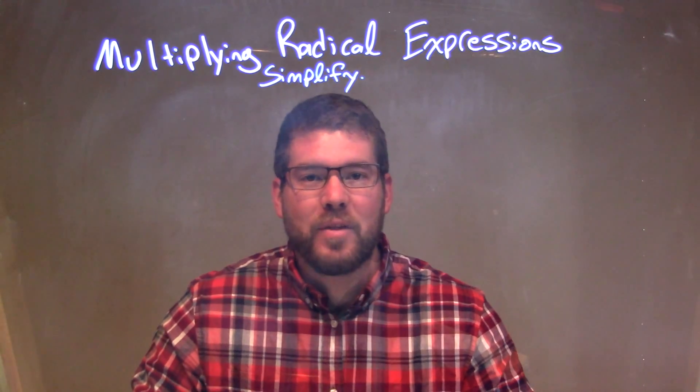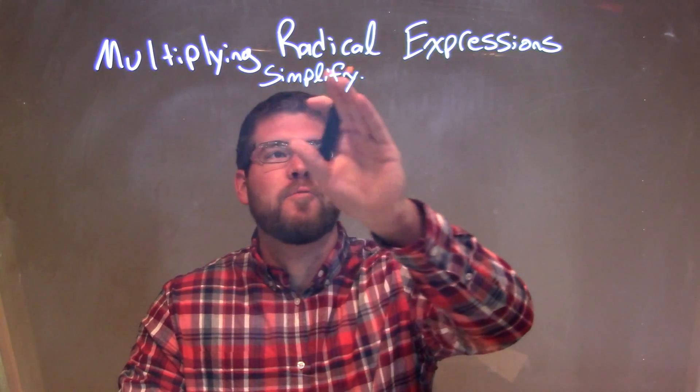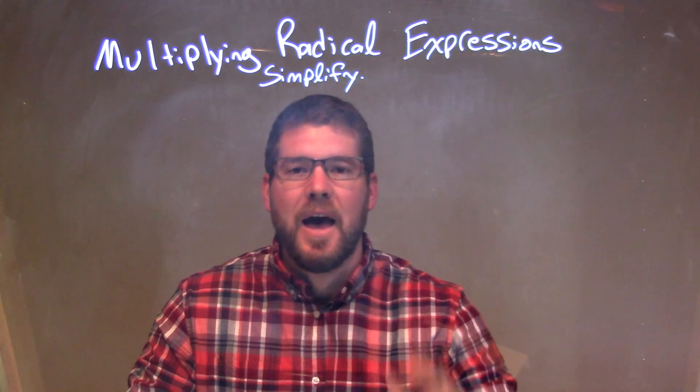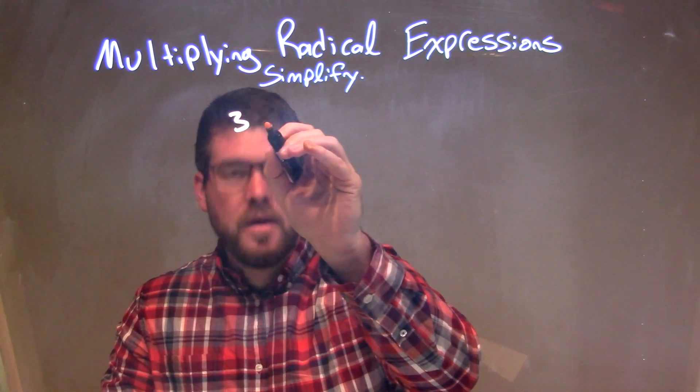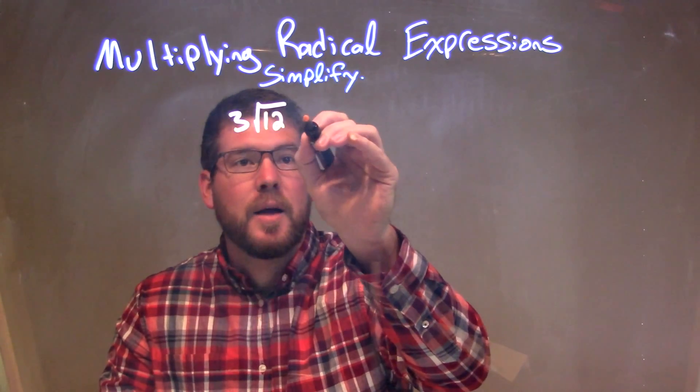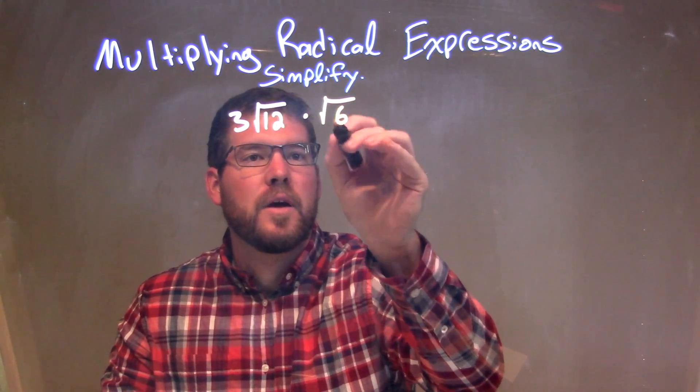Hi, I'm Sean Gannon, and this is MinuteMath. Today we're going to learn about multiplying radical expressions. What we want to do here is simplify this problem. We have 3 times the square root of 12 times the square root of 6.